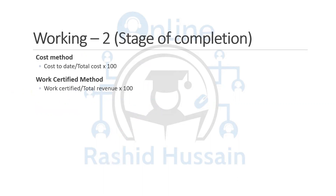The second step is measuring the progress of the contract, which is the stage of completion. There are two methods. The first is the cost method, and the second is the work certified method. The examiner will mention within the question which method to use. If the question is silent, simply see which information is available to calculate the stage of completion.